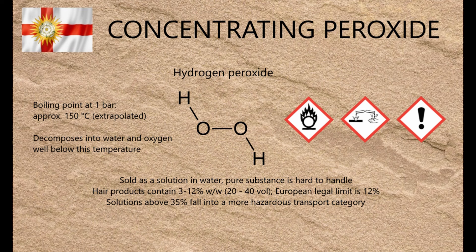Even worse, the boiling point of hydrogen peroxide is higher than that of water, so as it gets more concentrated the boiling point increases and the rate of decomposition gets even faster, resulting in a positive feedback loop of water and misery. What's needed is a way of removing the water while substantially reducing the boiling point of the mixture.